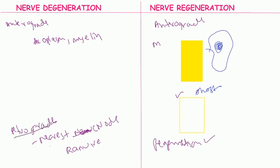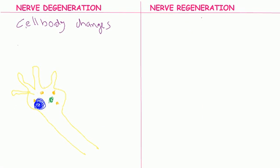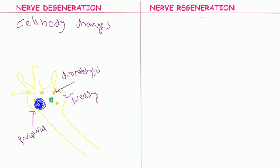Now we will see what are the cell body changes in both of them. In cell body changes, the Nissl bodies of the nerve cell body are degenerated — we call this chromatolysis. There is also cell swelling, and the nucleus is shifted to the periphery.